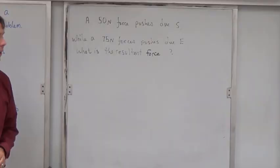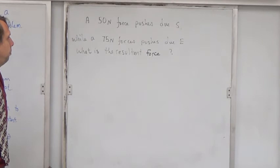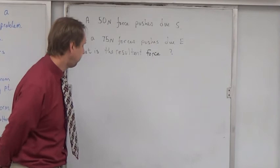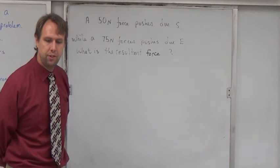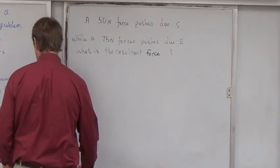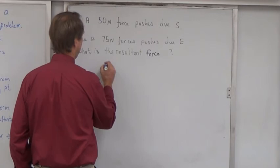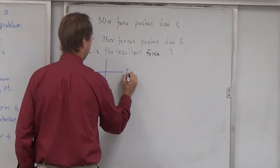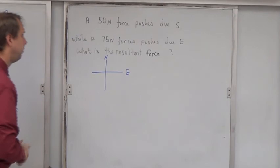Here's a new one. A 50-newton force pushes due south while a 75-newton force pushes due east. What is the resultant force? If you feel like you can do this on your own, go for it. If you want to follow along with me, that's fine. Just take notes and make sure you're able to do these on your own afterward. I'm going to begin by drawing a principal axis. I know this is going south and to the east, so I'm going to start fairly far up and to the left on my paper. I'll mark that as east, that is north, that's west and south.